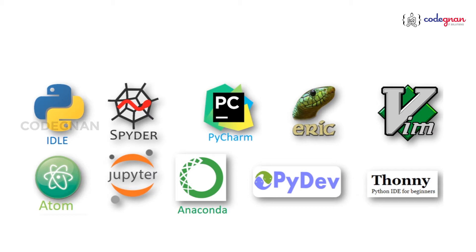People use Anaconda because it's a conglomerate of multiple environments including Spyder, Jupyter, and R programming. You also have Visual Studio. In development, people use a wide variety: PyCharm, Visual Studio, Vim editors, PyDev, Atom, and for collaborative work, Google Colaboratory. But any software is the same if you are good at logic and can write code.